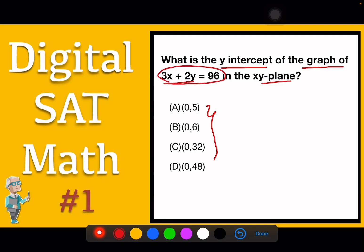If there is an equation given, how do we solve it? We can solve it in numerous ways, but the easiest way is we can start by writing down the given equation, 3x plus 2y equals 96. And then we can substitute 0 in place of x because all the answer choices start with 0.